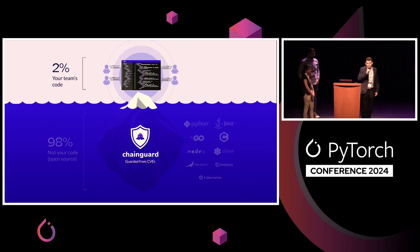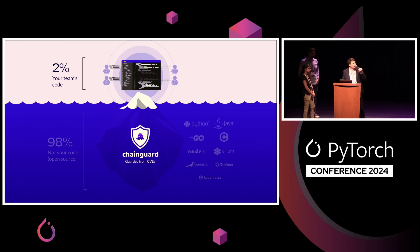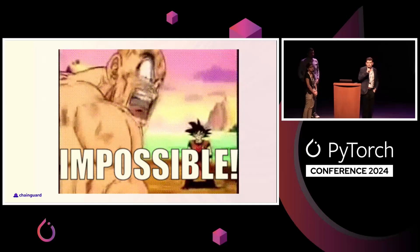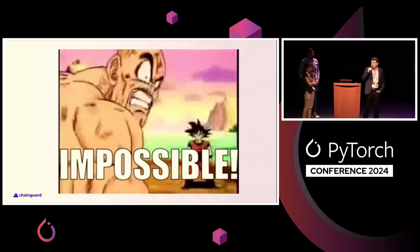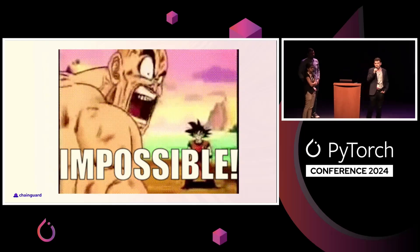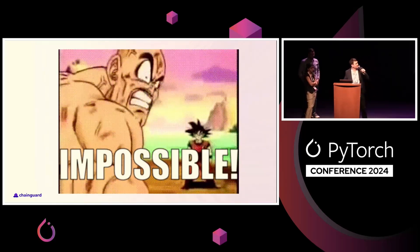At ChainGuard, we create low to no — frequently zero — CVE images. We do this in a few ways: we build fresh, we patch when needed, we issue advisories, and we strive for images to be as minimal as possible. When you're aiming for zero, every removed package really matters, because every package is a potential source of CVEs that could appear literally any day. And yes, zero CVEs is actually achievable — it's not just a marketing claim. We work at it every day and we do actually get to zero CVEs, which is remarkable but possible.